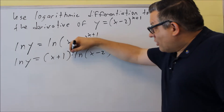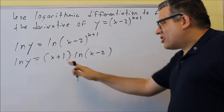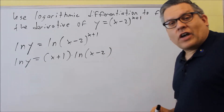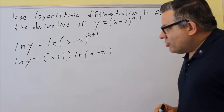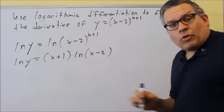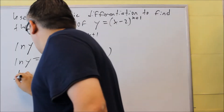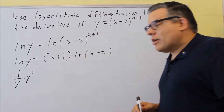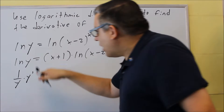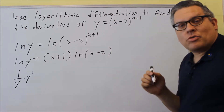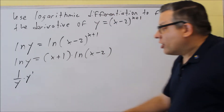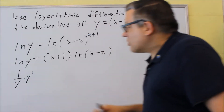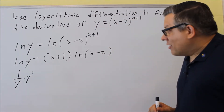Now that we have it in this form, we're going to take the derivative of both sides. The derivative of the left-hand side gives us the derivative of ln Y, which is 1 over Y, multiplied by the derivative of the inside. The derivative of Y becomes Y-prime, so we write it as Y-prime over Y using the U-prime over U formula.